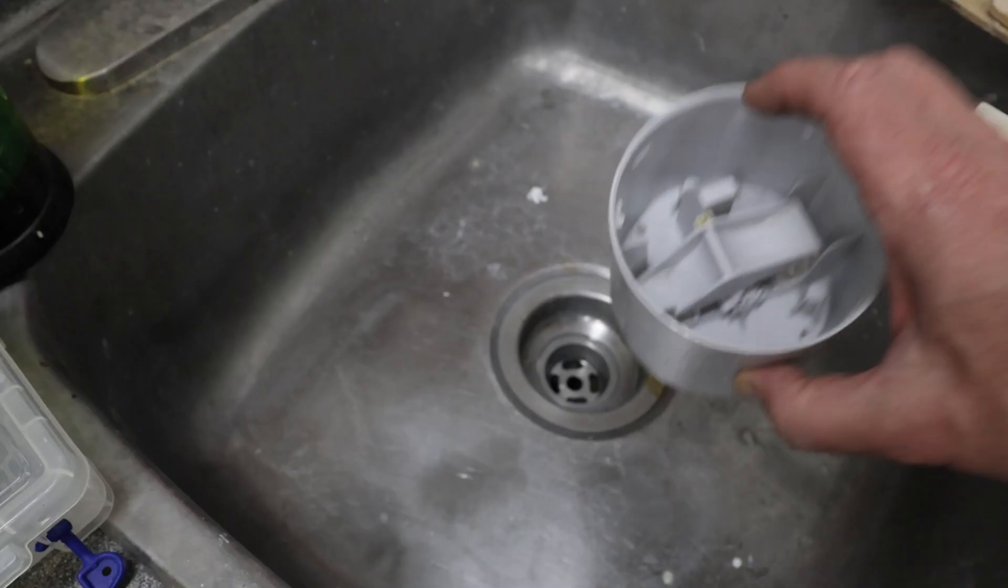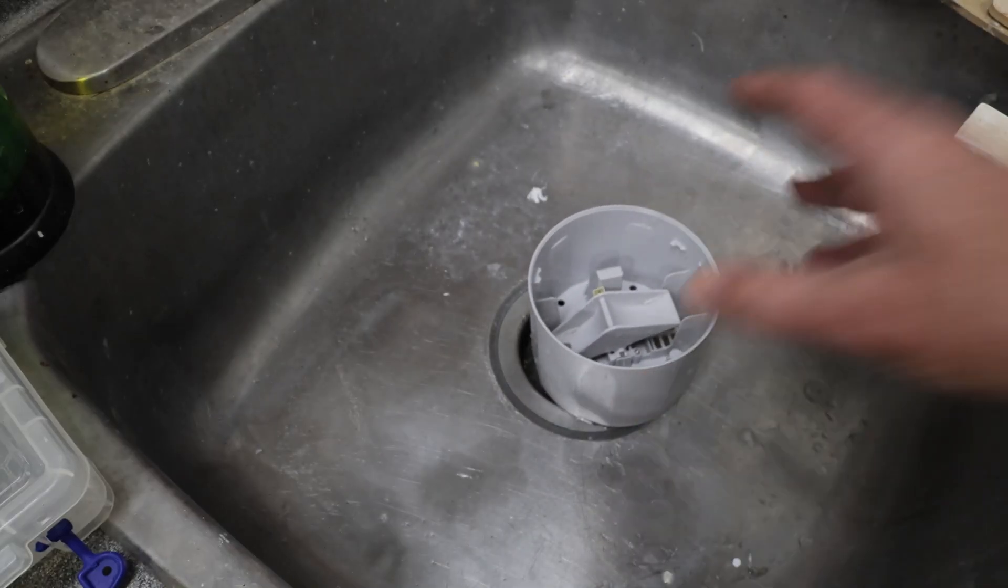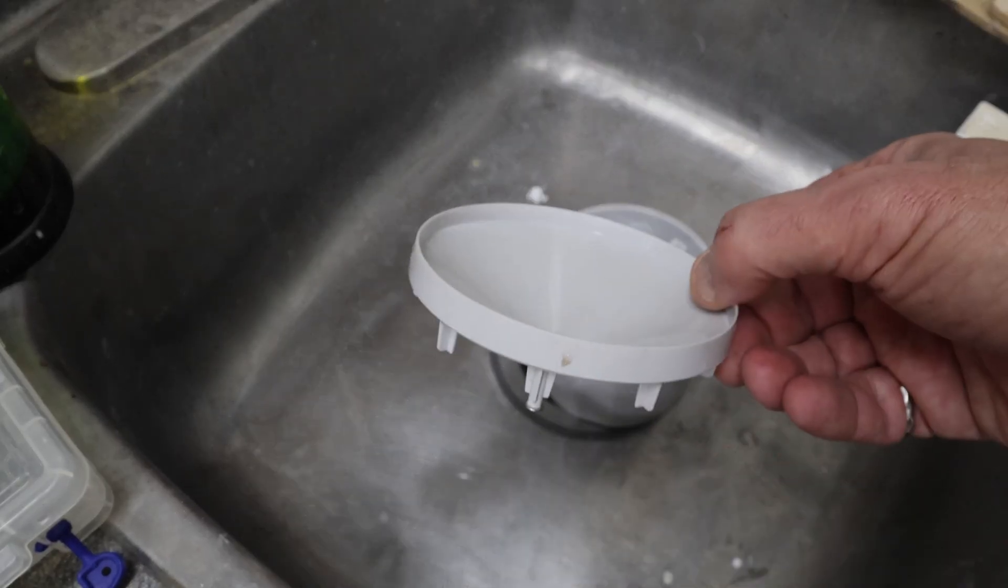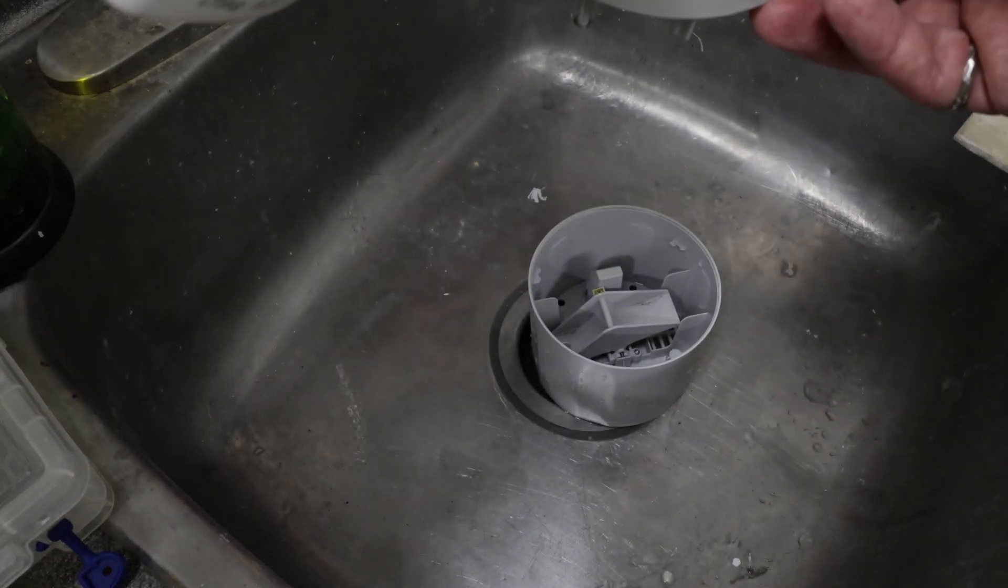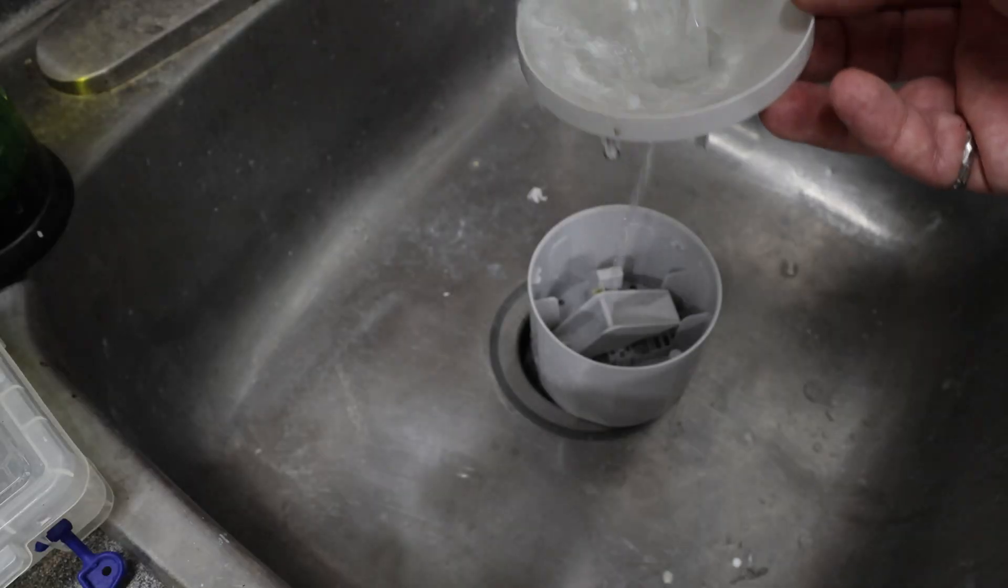So water comes into a bucket and tips it, then of course if it gets water on the other side eventually tips back. In fact actually we can show that quite easily. This is the top of the assembly. It's basically a funnel and it creates sort of a laminar flow. Put some water into it and it'll flow out.